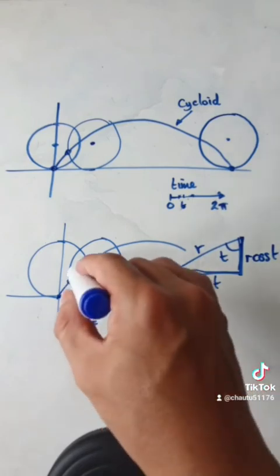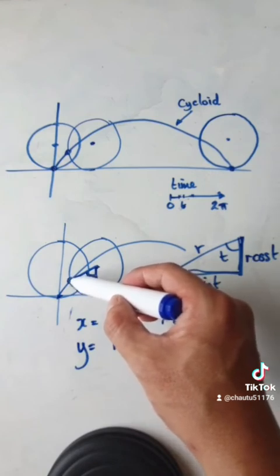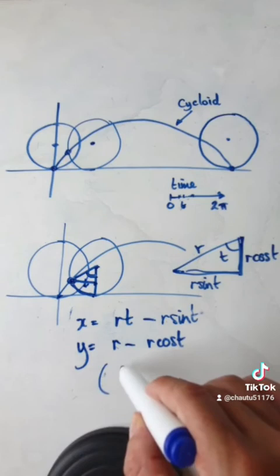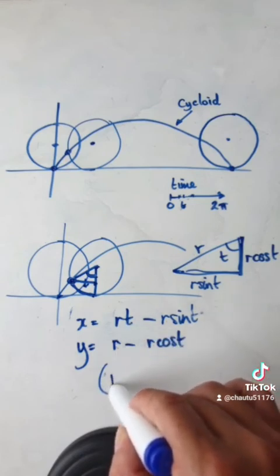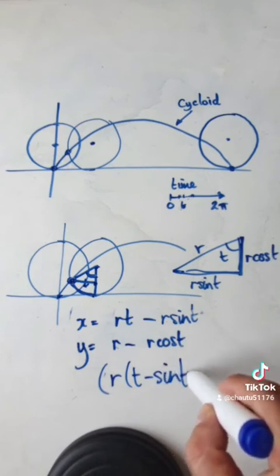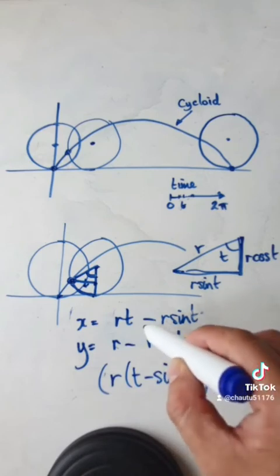So the parametric equations for this particular point here, as time is ticking away, would be given by this. The x location would be r t minus sine t.